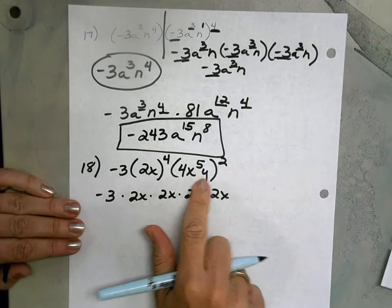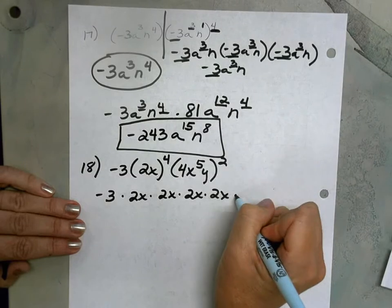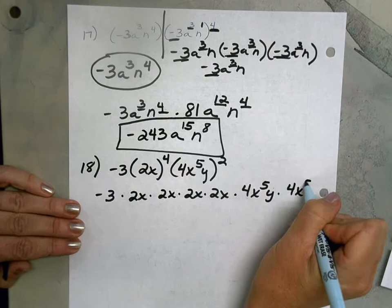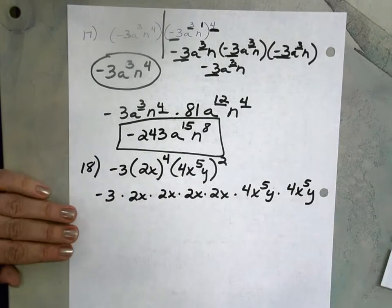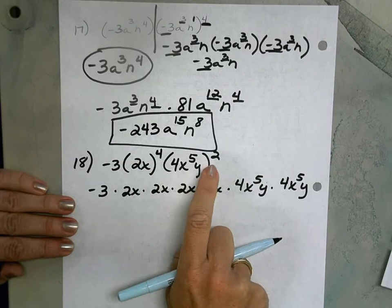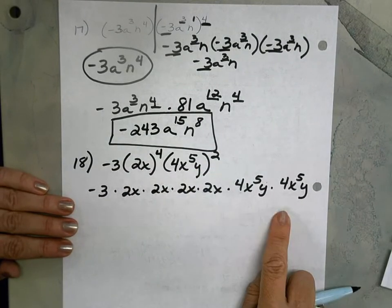4x to the fifth y squared, which means I'm going to write my 4x to the fifth y two times. This one might be easier for you to see why this rule works, this power to a power, if we write everything out.